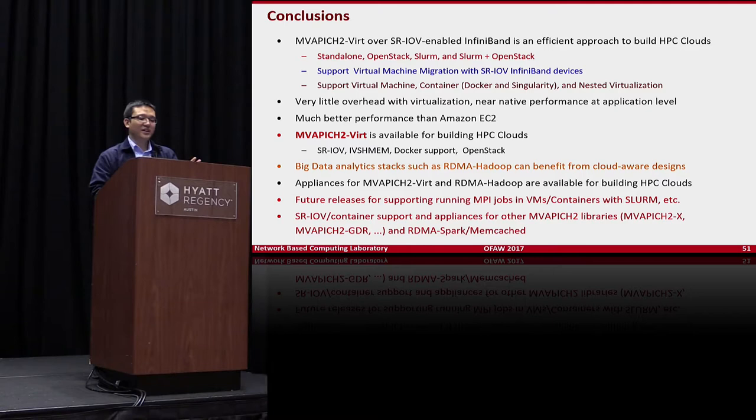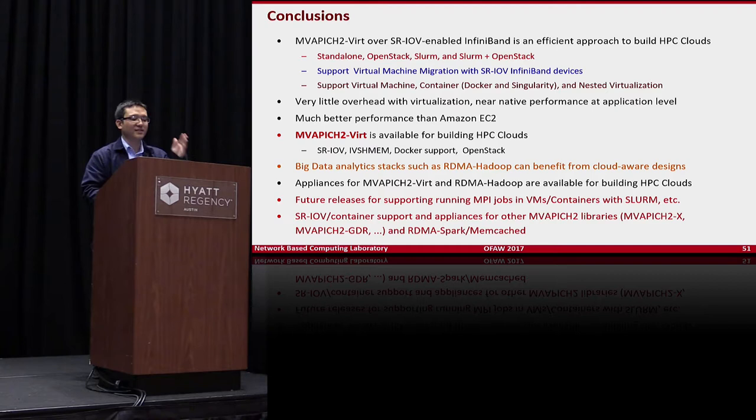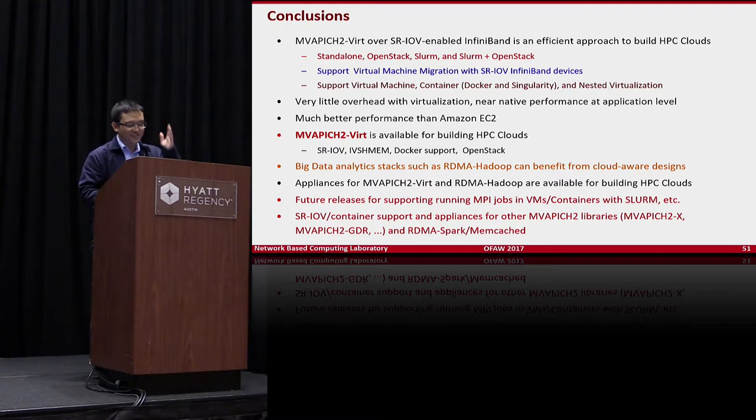In conclusion, MVAPICH2-Virt efficiently leverages SR-IOV and IVSHMEM to deliver best performance, whether running standalone, with OpenStack, with SLURM, or with SLURM+OpenStack. We support VM migration with SR-IOV devices without changing any driver or hypervisor. We support both VM-based and container-based deployments, as well as nested virtualization. Results are very promising — we outperform Amazon EC2 for MPI jobs.